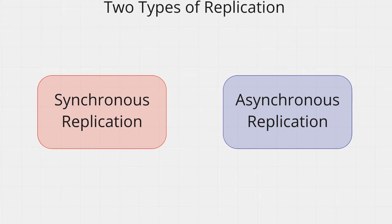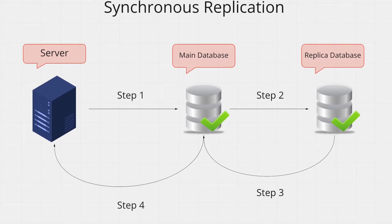There are two fundamental ways that replication can happen: synchronous replication and asynchronous replication. In synchronous replication, your server writes to the main database. The main database then writes to the replica database. The replica database acknowledges back to the main database confirming that it wrote the data safely. Finally, the main database tells your server that the write was successful, and now both your main and replica databases will have the same data. The key part here is the blocking nature of the write — the server has to wait until both the master and replica have the data before returning a response to the user.